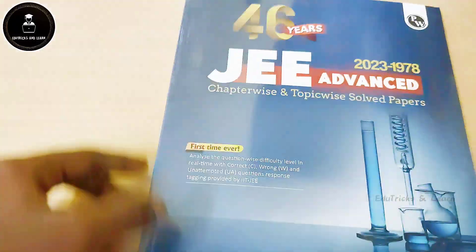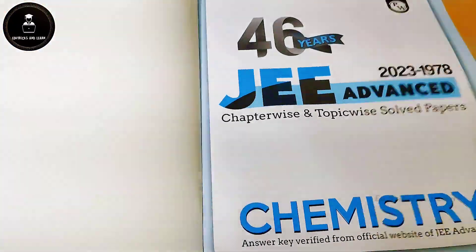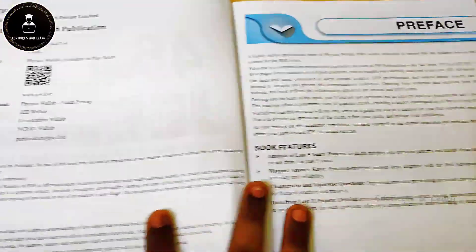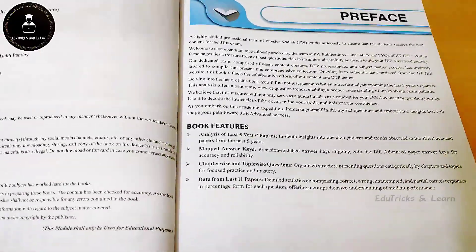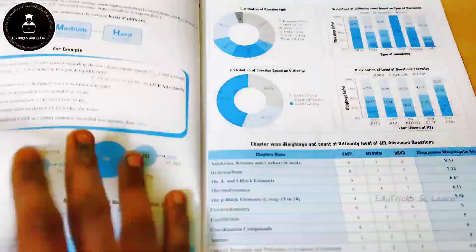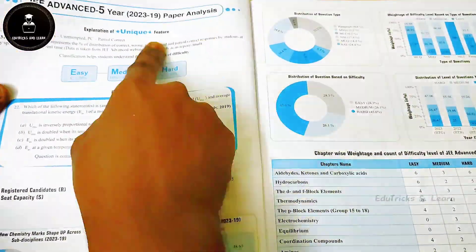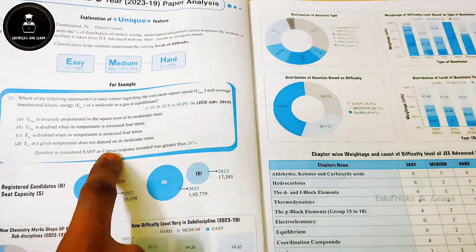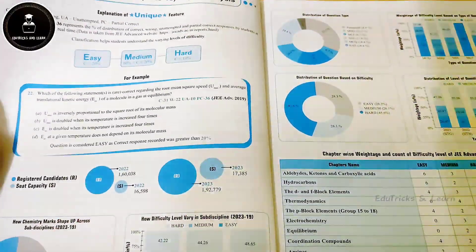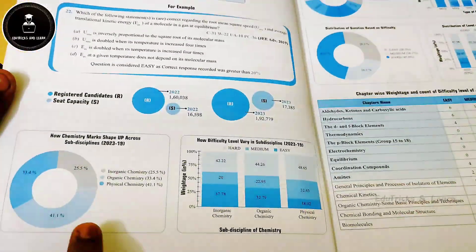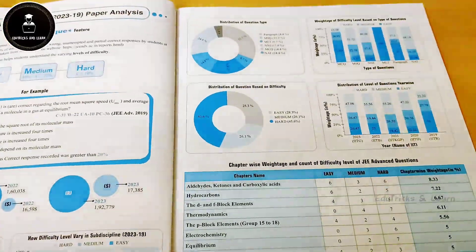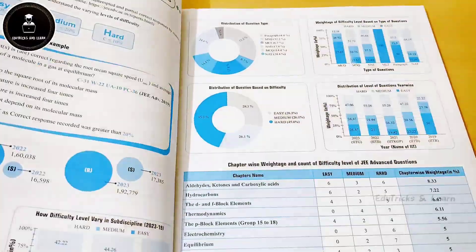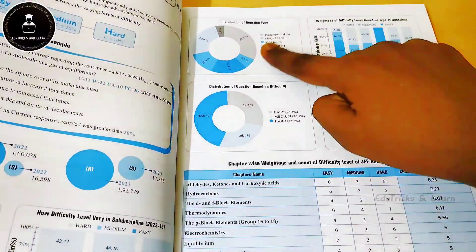In this video we are completely reviewing the features of the Chemistry JEE Solved Question Paper. First of all, they have given the proof phase with book features such as analysis of the last five year question papers, mapped answer key, and chapter-wise and topic-wise questions. In the analysis of last five years papers, the unique feature is that questions are characterized as easy, medium, and hard across subdisciplines of chemistry — organic chemistry, physical chemistry, and inorganic chemistry — showing how many questions and what weightage each has from previous years.